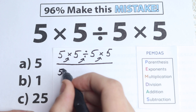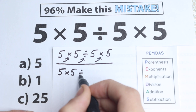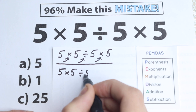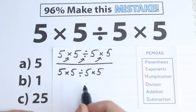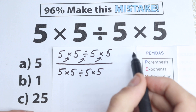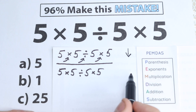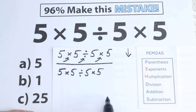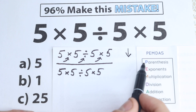Here is our question: we have 5 times 5 divided by 5 and times 5. We should understand the correct order to solve this problem. PMDMC works from the top to the bottom and we have a lot of steps: parentheses, exponent, multiplication, division, addition, subtraction. Let's look at these steps. First step — parentheses.